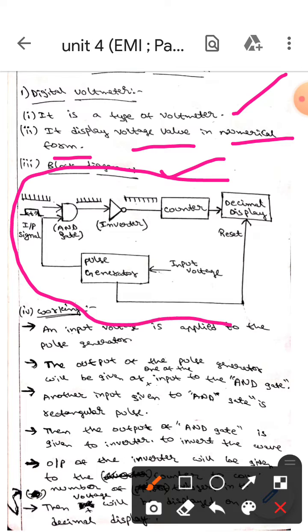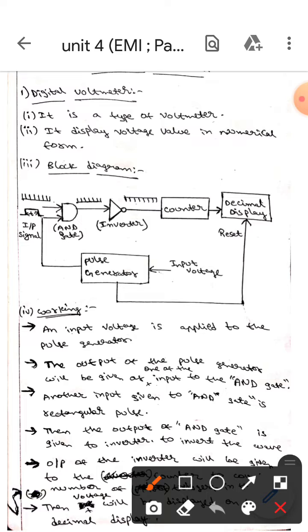This diagram is the block diagram of a digital voltmeter. Now I'll explain how it works. First of all, the input voltage is applied to the pulse generator.